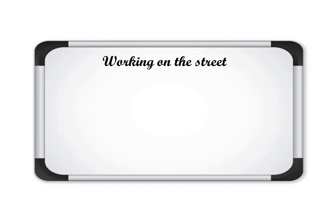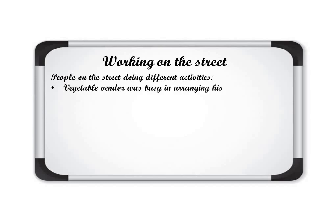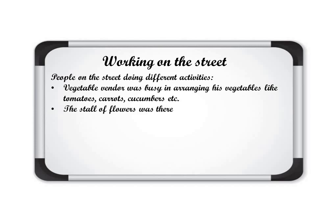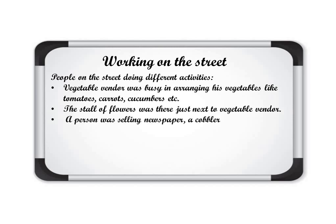The two cousins first came to the street and talked about different people working there. A vegetable vendor was busy arranging his vegetables like tomatoes, carrots, and cucumbers. A stall of flowers was just next to the vegetable vendor — a florist selling different types of flowers. Then a person was selling newspapers, and a cobbler was sitting under a tree with his tools in a box.